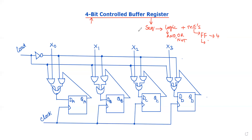The type of this register is a buffer register. A buffer is a logic operator where the output is the same as the input — if input is 0, output is 0; if input is 1, output is 1. A register stores a group of bits. To store a group of bits, we use a group of flip-flops.